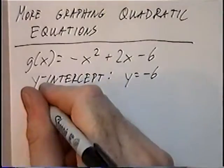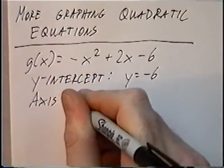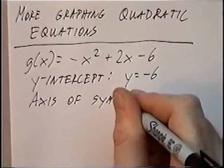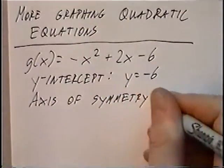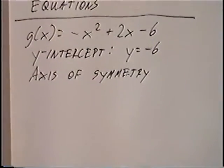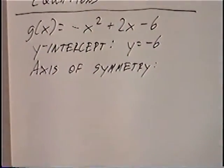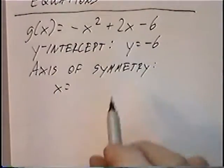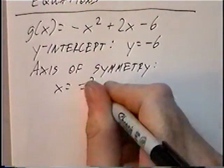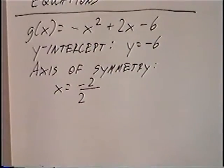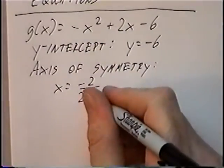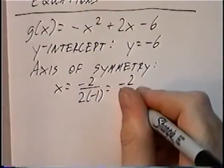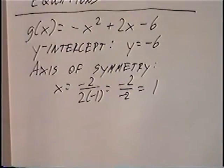Next we find the axis of symmetry, which is x = -b / 2a. So x = -2 / (2 × -1). a in this case is -1, giving us -2 / -2, which equals positive 1. The axis of symmetry is x = 1.